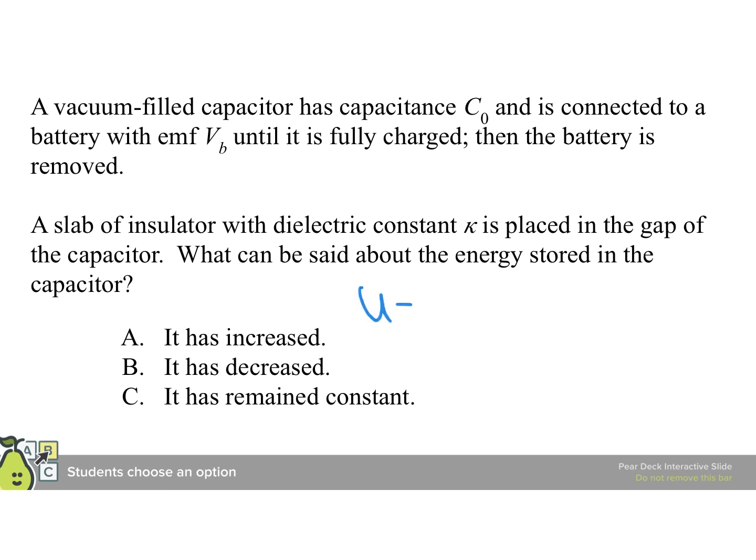You might remember that we had that the energy stored in the capacitor is one-half times Q times V, which is going to be one-half times Q times Q over C, or one-half Q squared over C. I use this one because the charge is constant since the battery is isolated, so it's nice to have that. And then this becomes, that's our original energy.